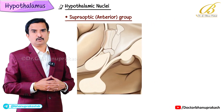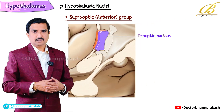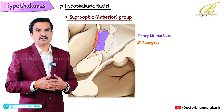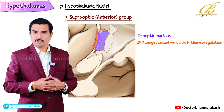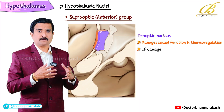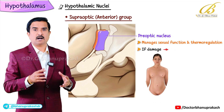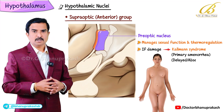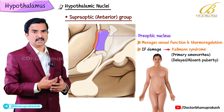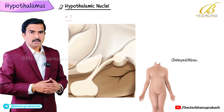The final nucleus in this group is the pre-optic nucleus. It manages sexual function and thermoregulation, and damage to this nucleus may cause conditions like Kallmann syndrome. These are all the nuclei that come under the anterior group.